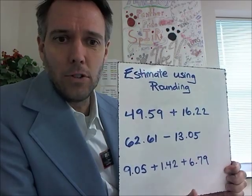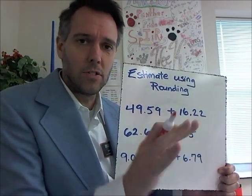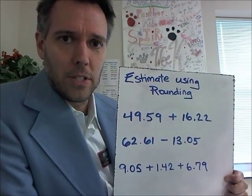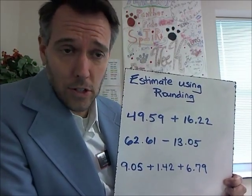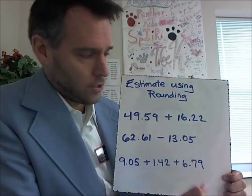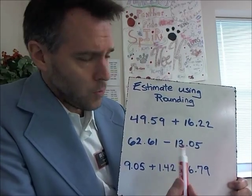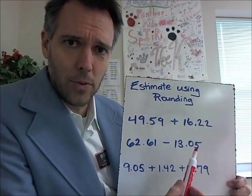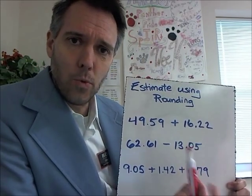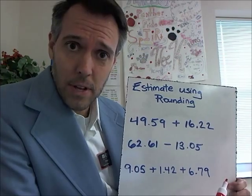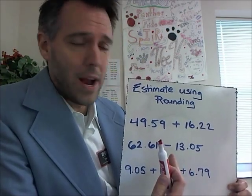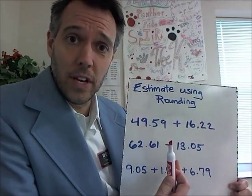Estimate using rounding. This is 6th grade math; you're going to be seeing this in 7th grade math, you're going to need this anyway. So let's look at this. When they say estimate using rounding, they want you to round, which means get rid of the decimals, and maybe even round to something that's very easy to use.